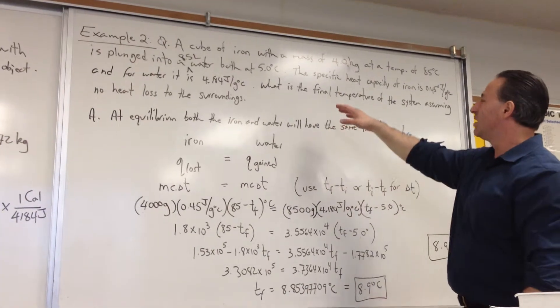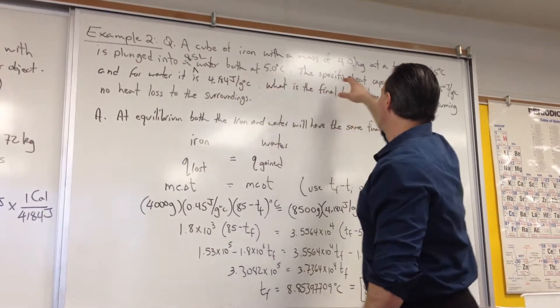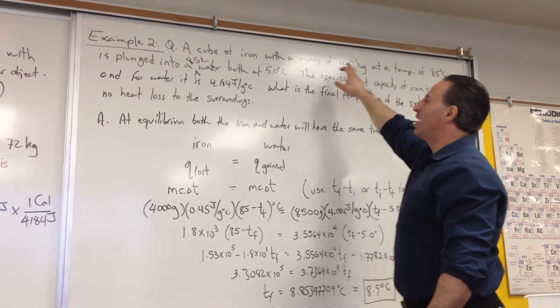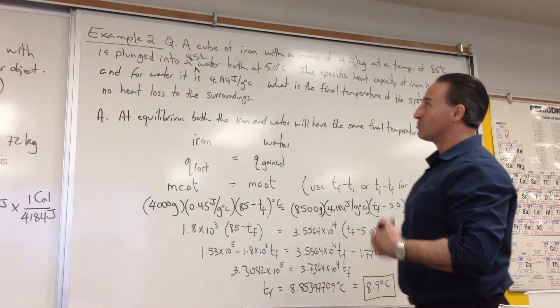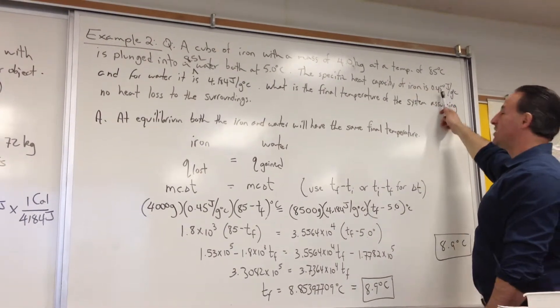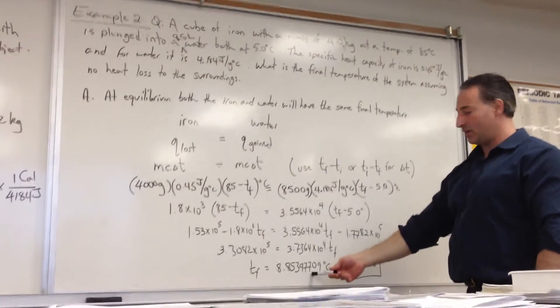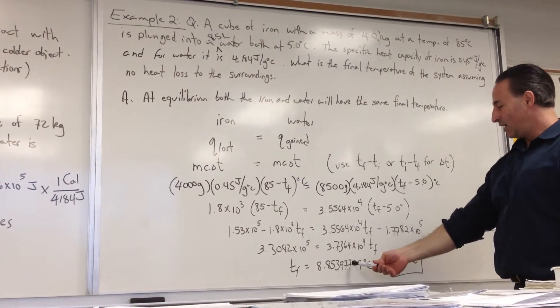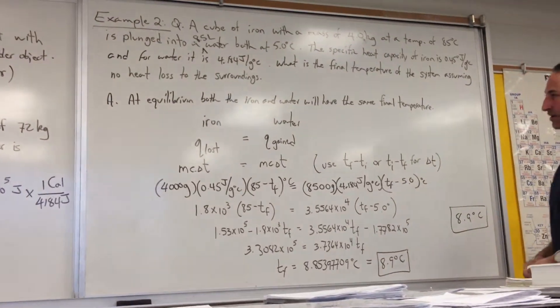Well, it just helps to illustrate the high heat capacity of the water. There's also a larger mass of water, there's only 4 kilograms of iron, whereas it's 8.5 kilograms of water. So there's more water, and the water has something like 10 times the heat capacity of iron. That is why the temperature only rises by 3 degrees. But it helps, it's very effective at illustrating the heat capacity of water compared to that of iron.